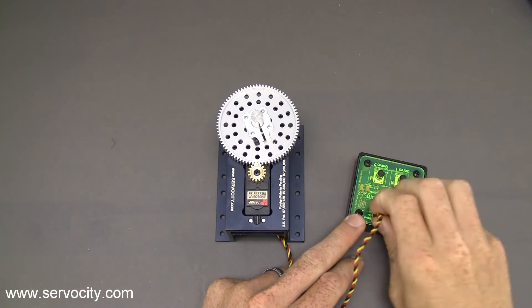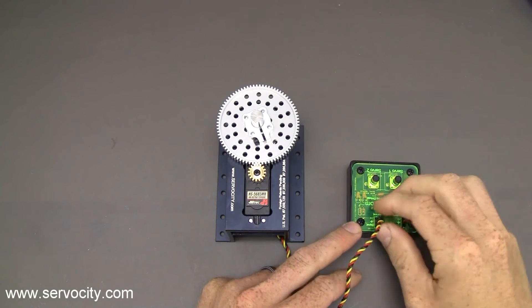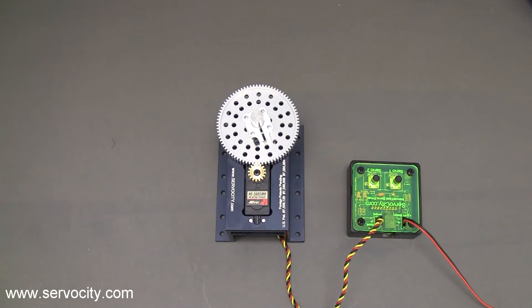And I'm going to go ahead and plug it back in. As you can see, it doesn't do anything at all and that's because it's beyond the mechanical limit of the potentiometer on the back side of the servo power gearbox.